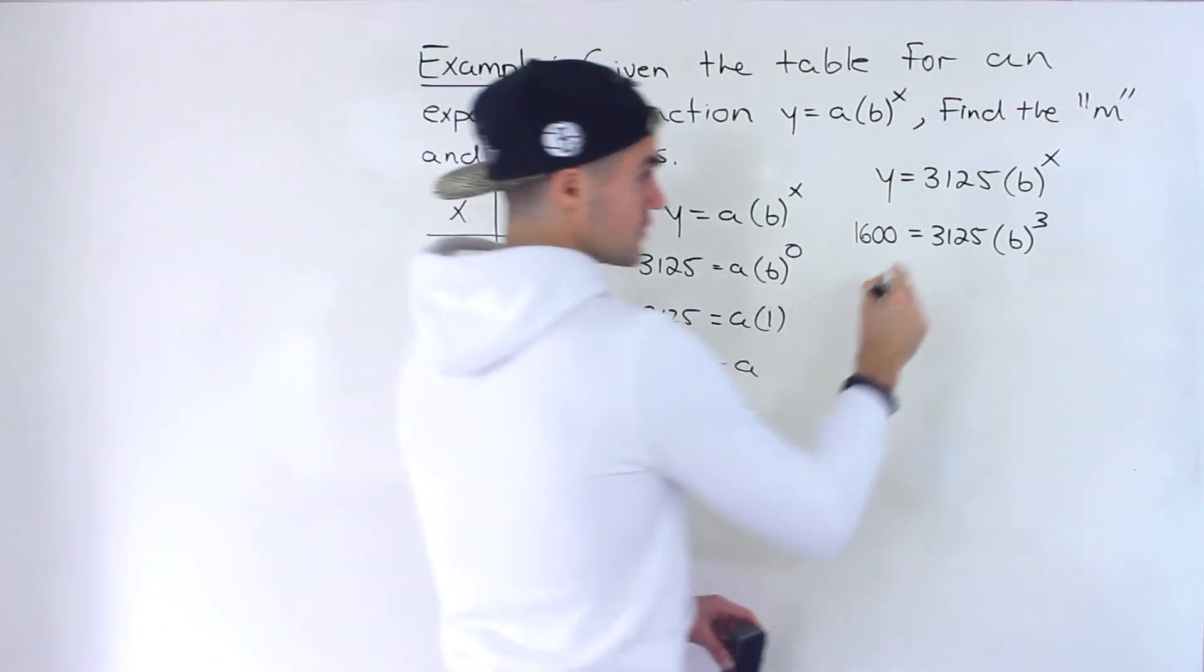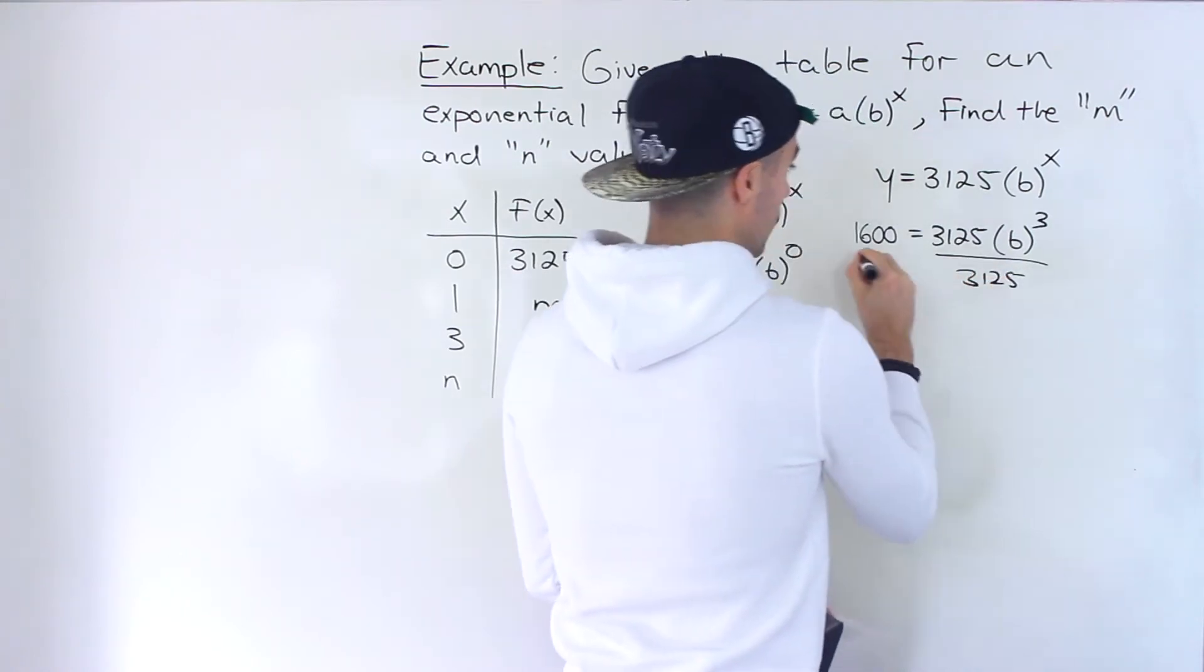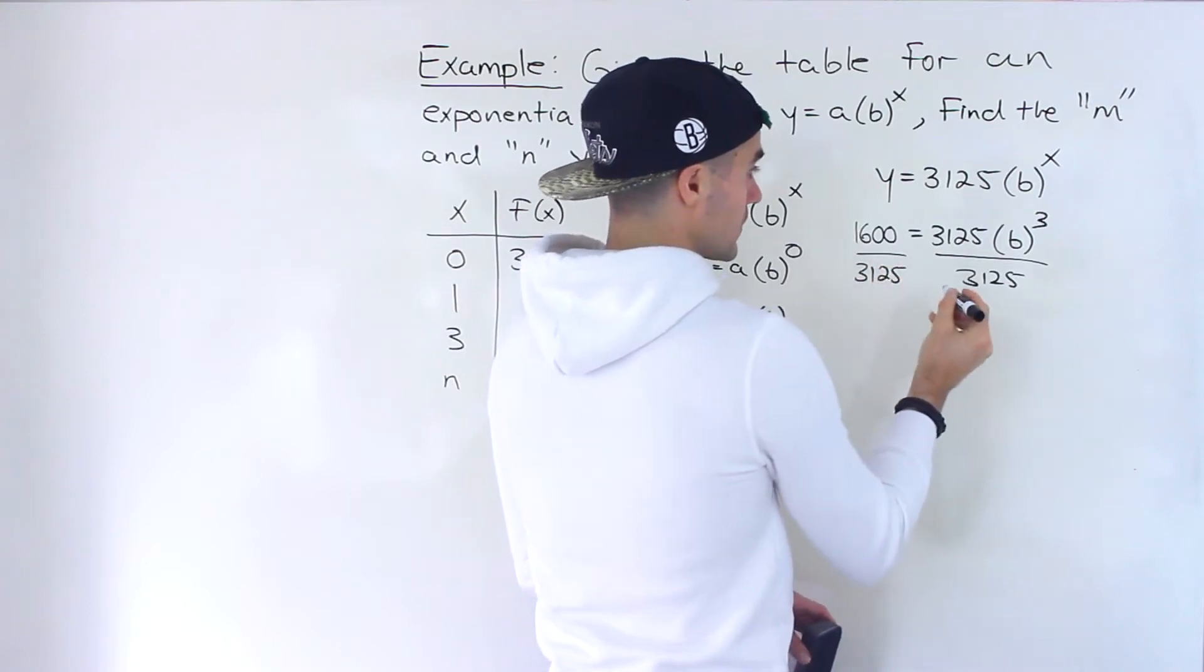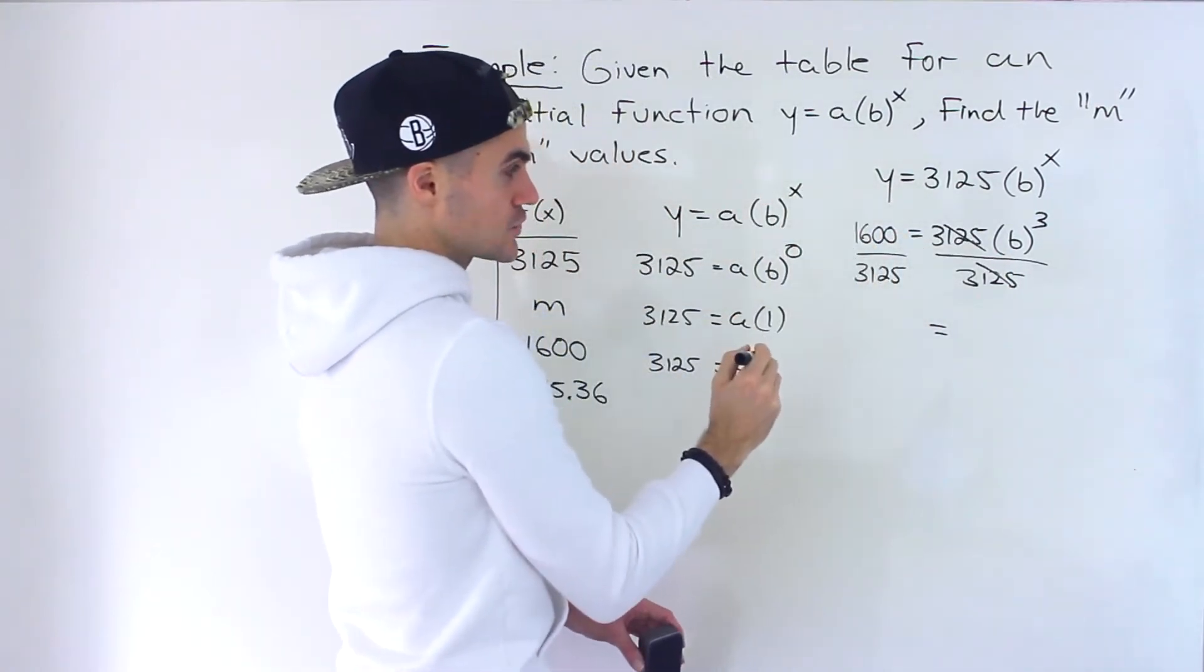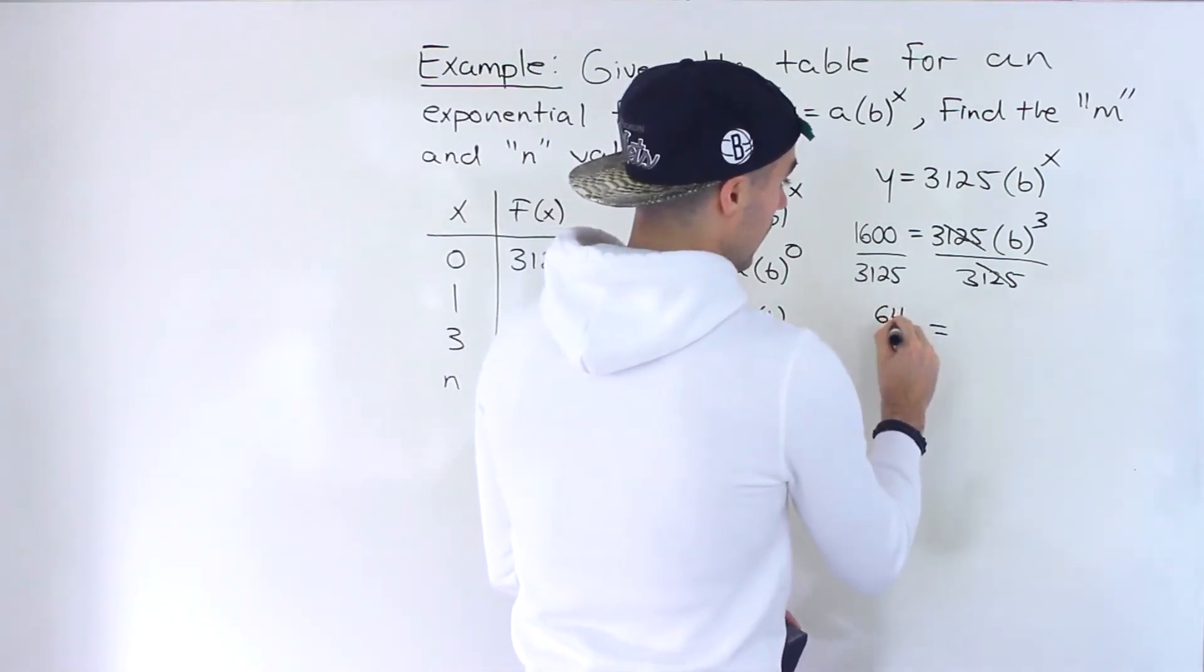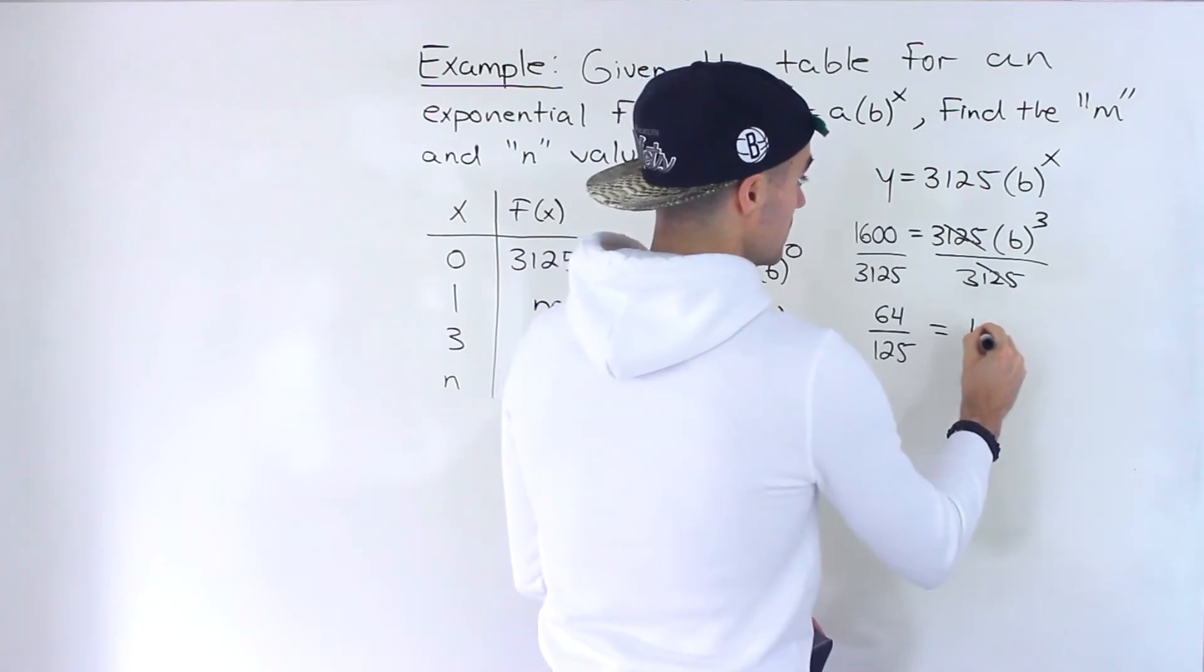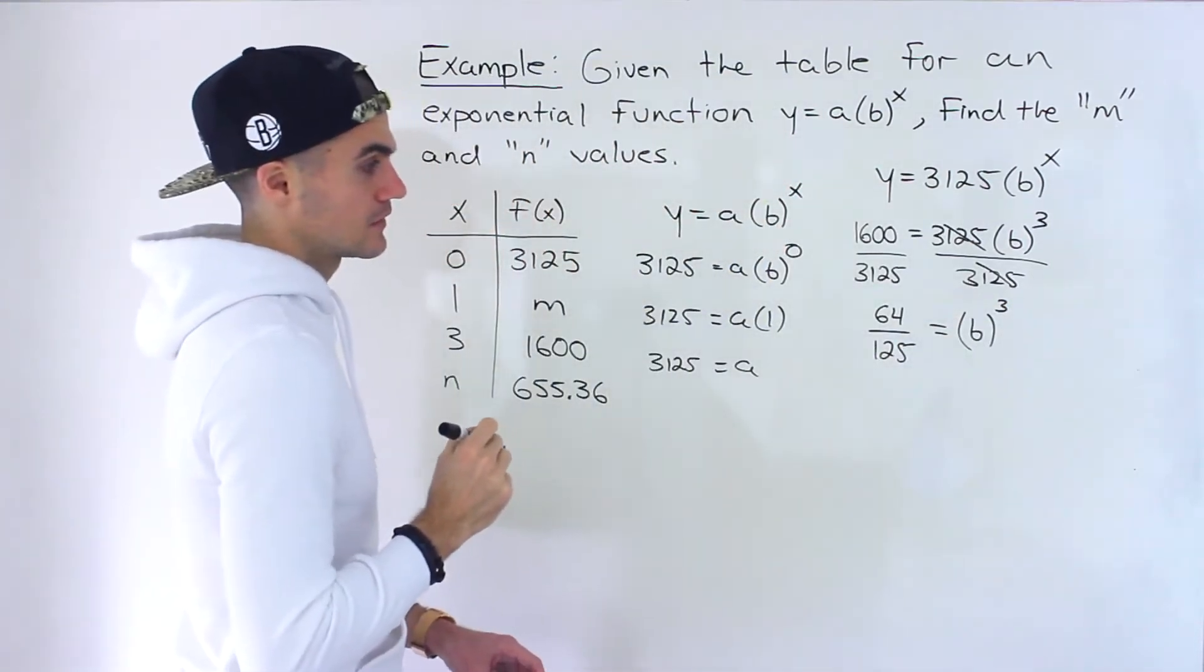And then from here, to solve for this b, we want to bring the 3,125 over. So we would divide both sides by 3,125. And then if you simplify this fraction over here, you'd end up with 64 over 125. And that's going to be b to the power of 3, like that.